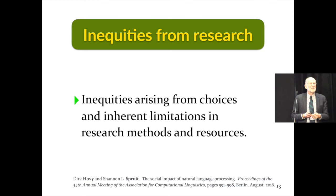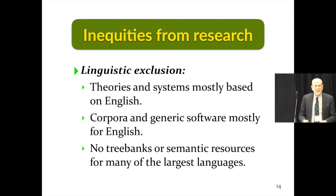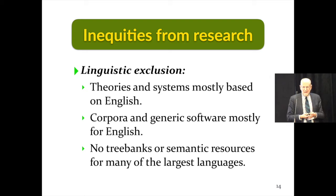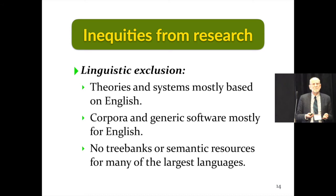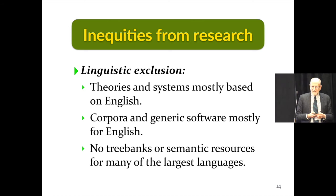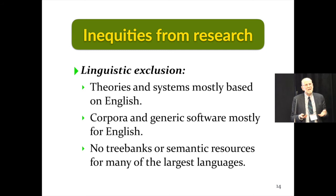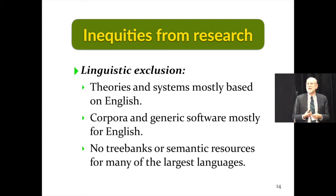Firstly, linguistic exclusion. Overwhelmingly, the work and research in natural language processing is based on English. We have theories, systems, resources, and software that are all organized around English. The consequences are that even researchers who work in non-English speaking countries often end up spending more of their time working on systems for English than for their own language. The result is generally a vicious circle: because more resources are created for English, that's what researchers work on, they get their publications, and we go round and round. The result is that we don't even have semantic resources or syntactic treebanks for many of the largest languages in the world, and no surprise — many of those languages are the languages of developing countries.